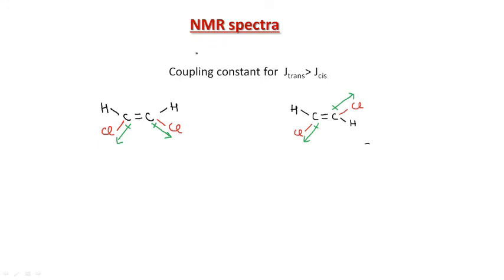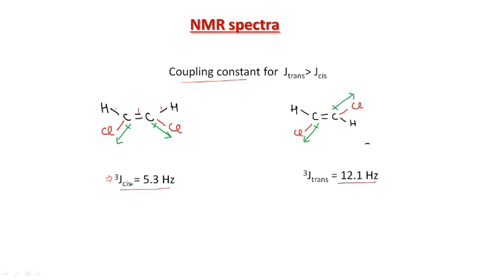In NMR spectra, the coupling constant is the key point distinguishing cis and trans isomers. The ³J coupling constant (three-bond coupling in ¹H NMR) for the cis isomer is always less than the ³J coupling constant for the trans isomer. In this way, physical and chemical properties along with spectroscopic techniques are used to distinguish between cis and trans isomers. I hope you find this lecture informative. Thank you all.